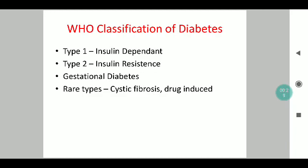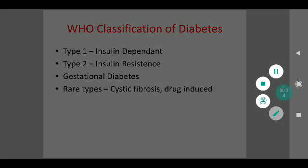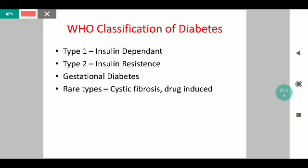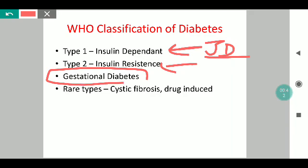Briefly, to revise the WHO classification of diabetes: type 1 is insulin dependent, also previously known as juvenile diabetes; type 2 is insulin resistance; type 3 is gestational diabetes; and there are other rarer types associated with conditions like cystic fibrosis or which are drug induced.